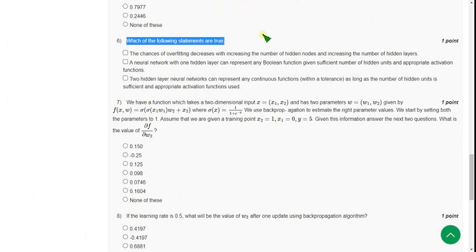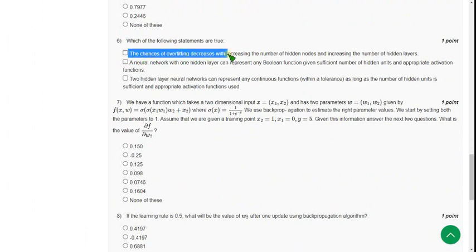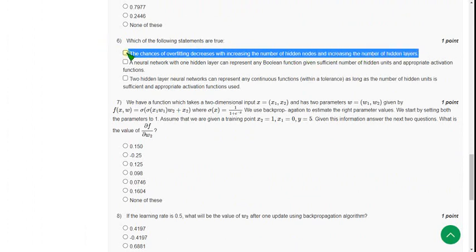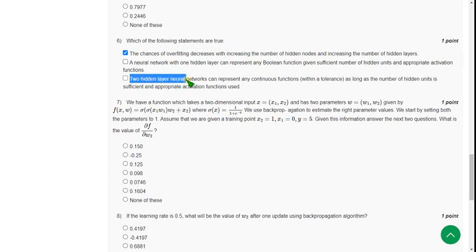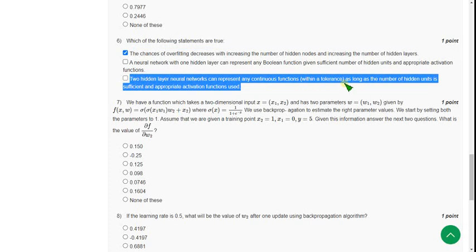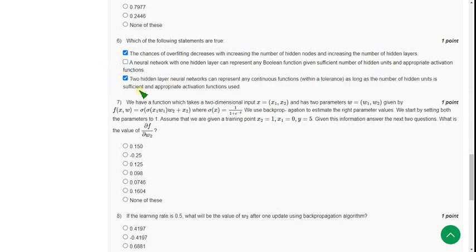For the sixth question, which of the following statements are true, I have got two answers. The first one is option 1: The chances of overfitting decreases with increasing the number of hidden nodes and increasing the number of hidden layers. And the other option is third one: Two hidden layer neural networks can represent any continuous function as long as the number of hidden units is sufficient and appropriate activation functions used.